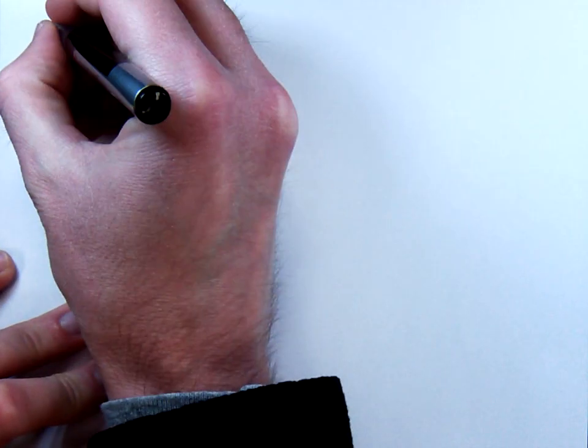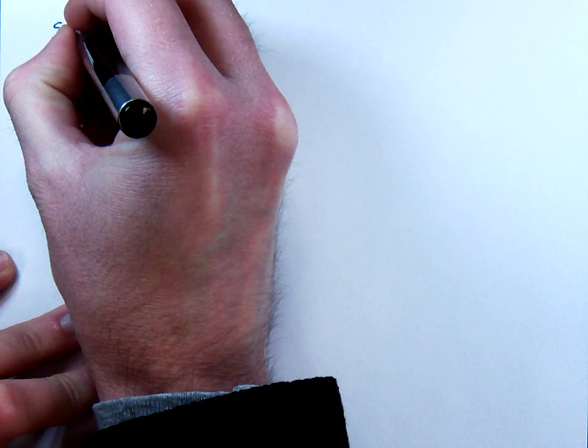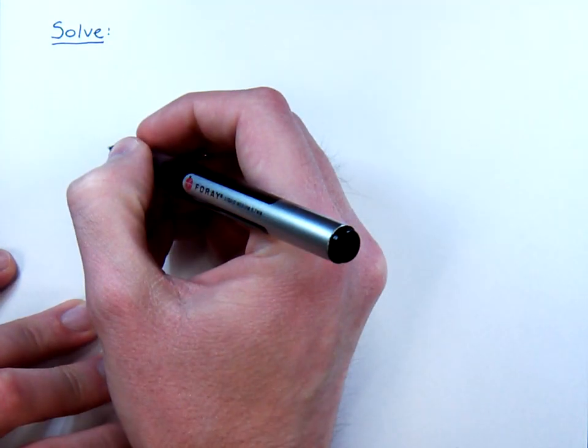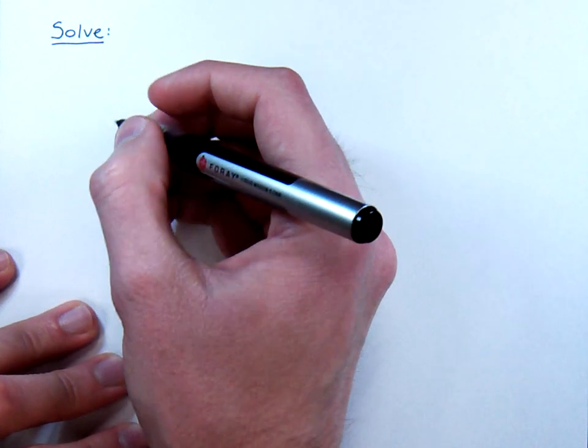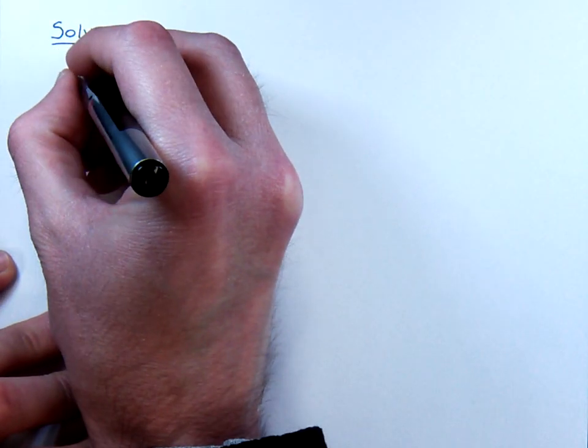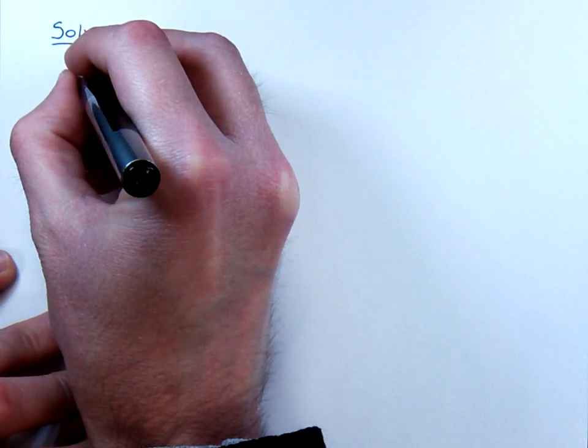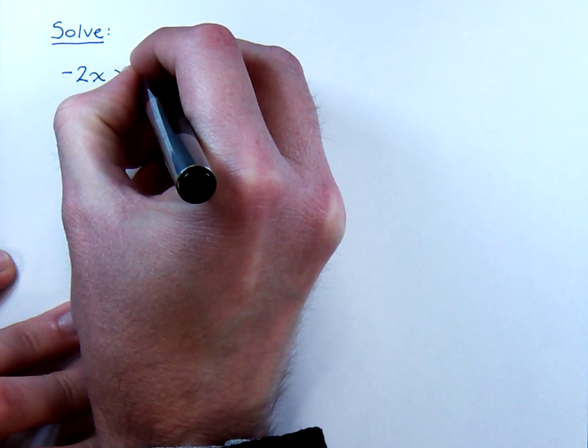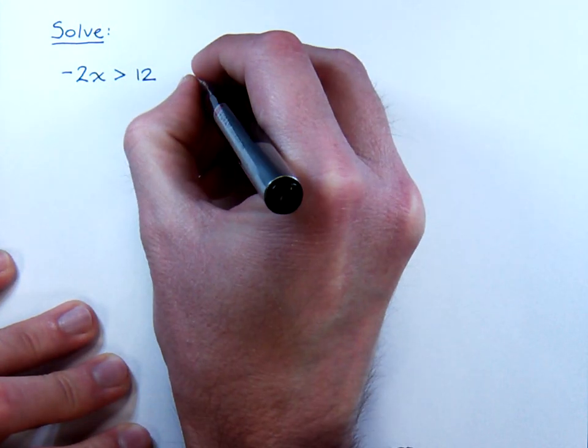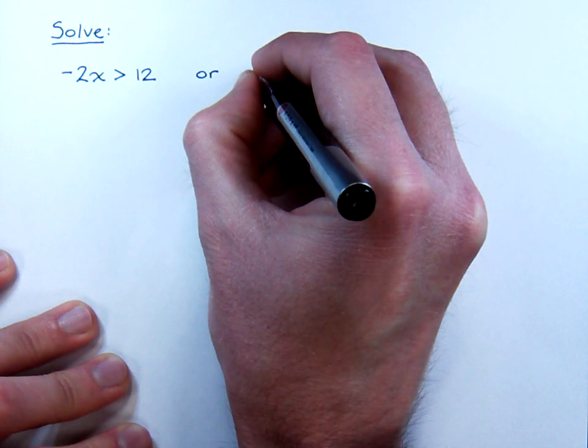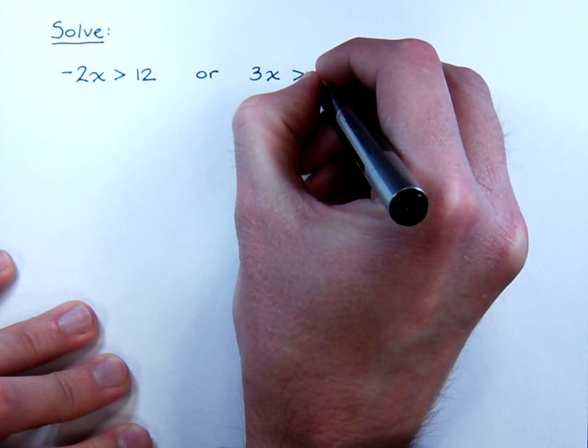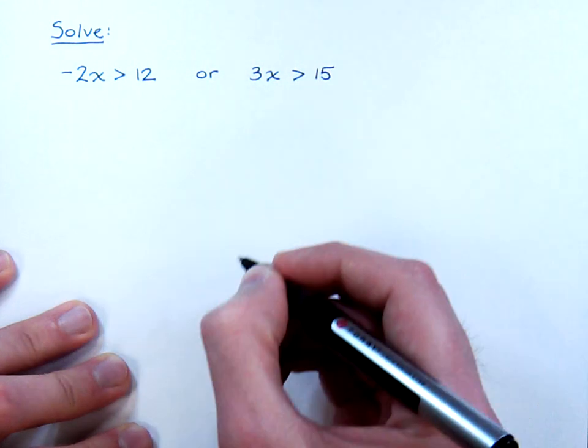All right, still talking about compound inequalities. Let's look at what happens whenever we solve some compound inequalities that are not set up in a nice, easy way for us to go ahead and graph. For example, this one: negative 2x is greater than 12, or 3x is greater than 15.